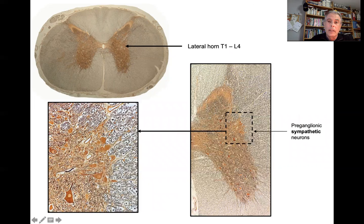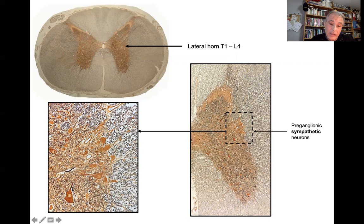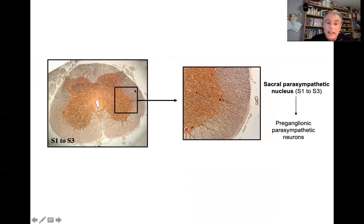From the autonomic sympathetic nervous system, between T1 and L4-L5 in the lateral aspect of the intermediary substance, there is an accumulation of preganglionic sympathetic neurons forming the lateral horn. These cells are slightly different from motor neurons. Similarly, in the sacral segments there is an accumulation forming the sacral parasympathetic nucleus, containing preganglionic parasympathetic neurons located at S1, S2, and S3.